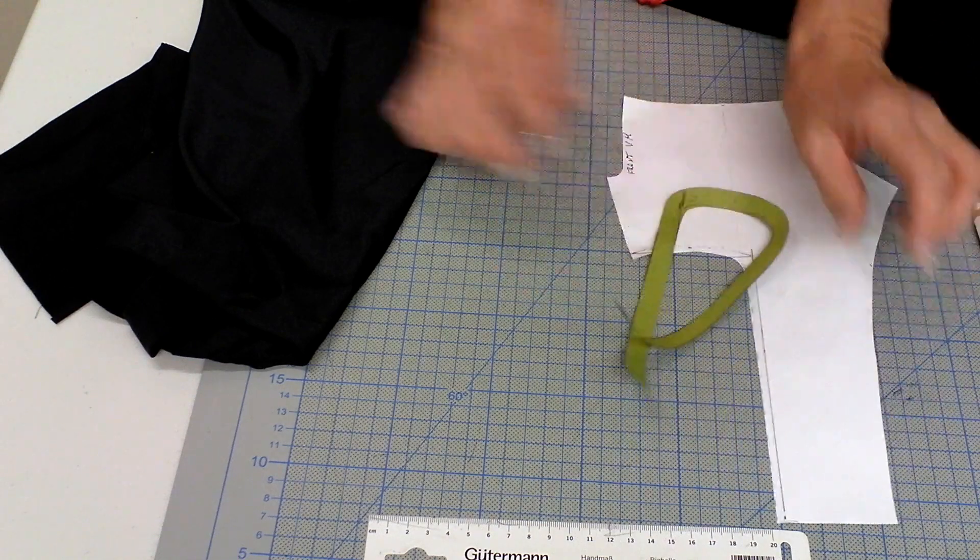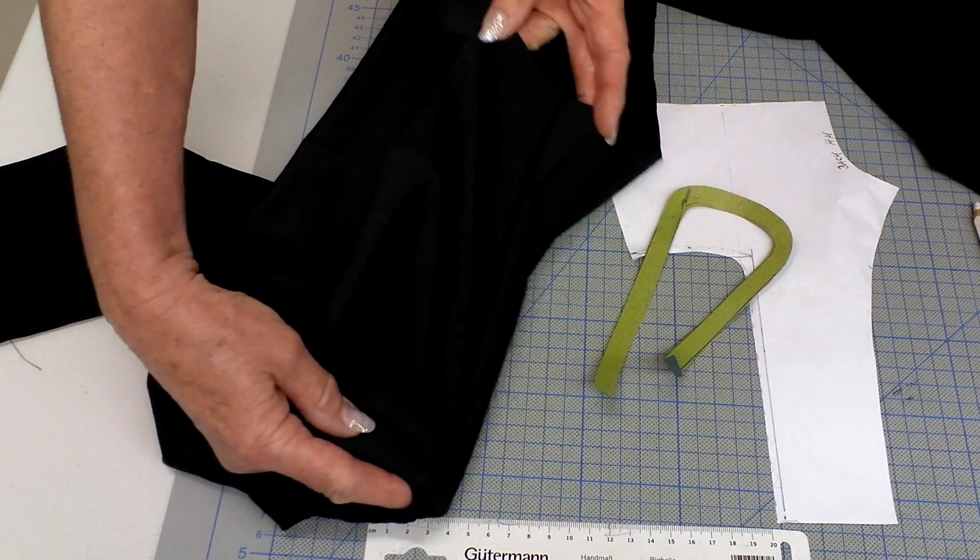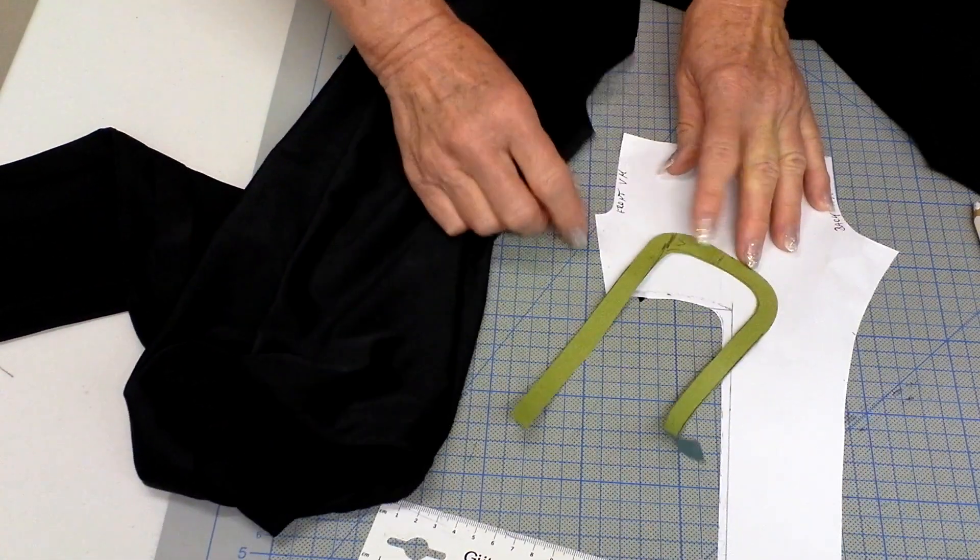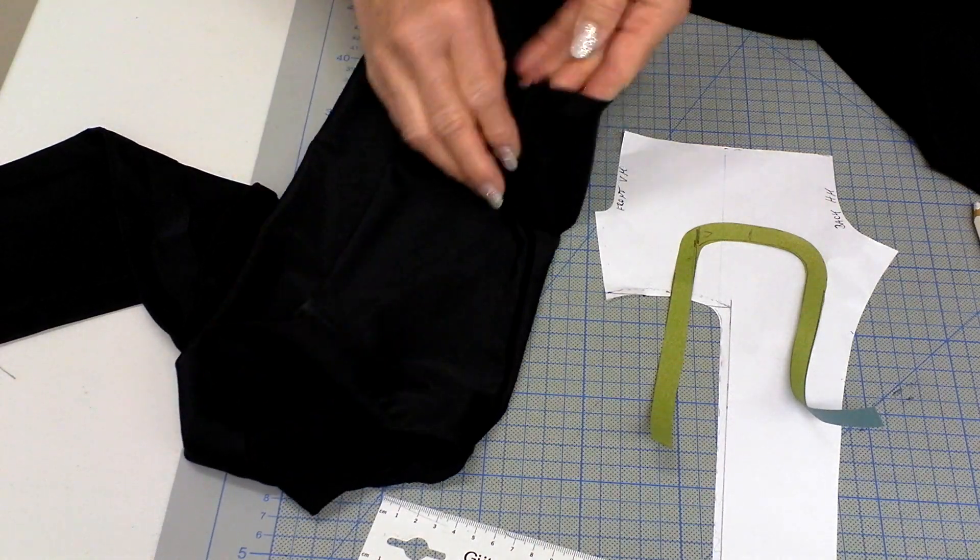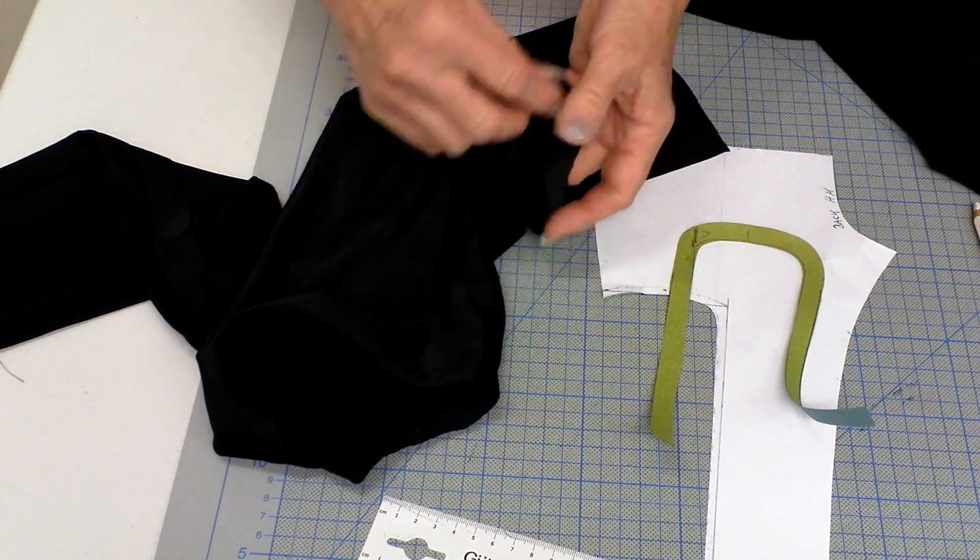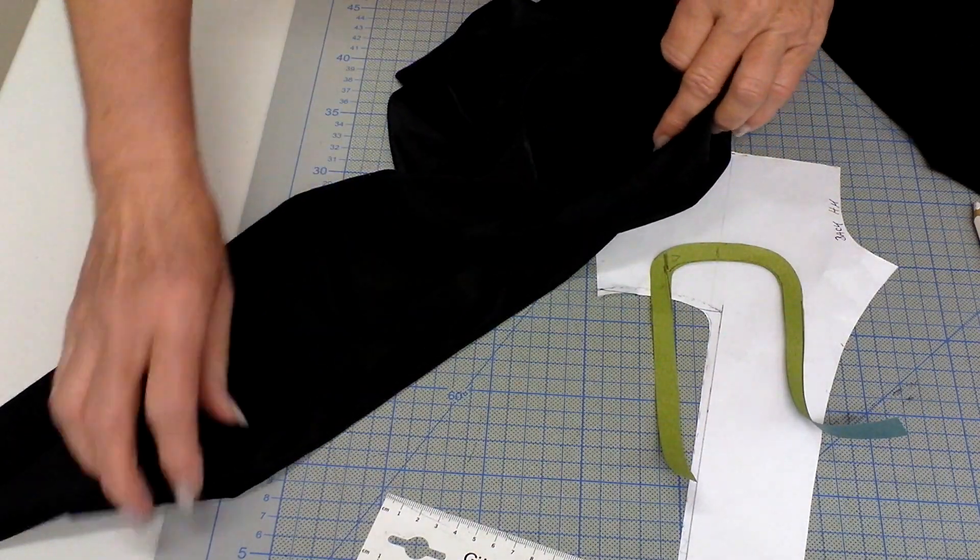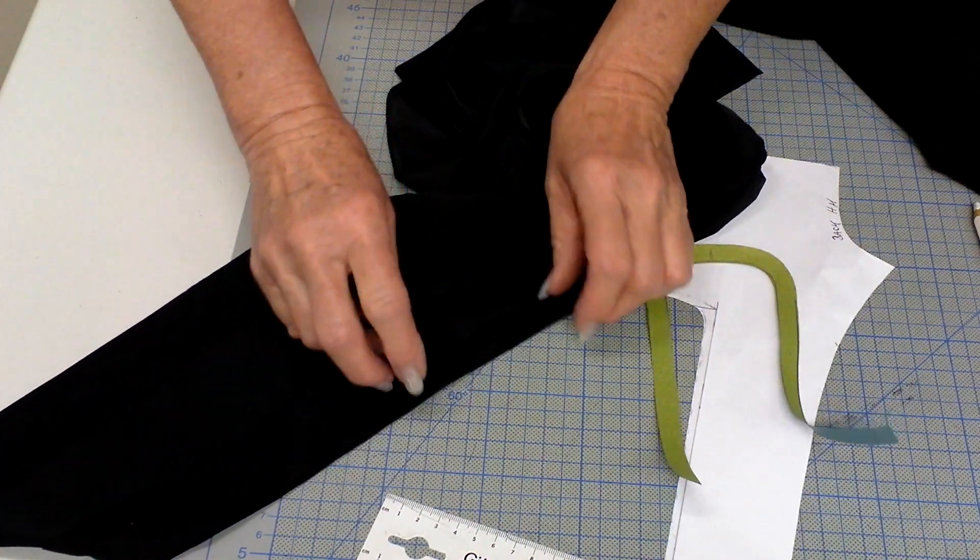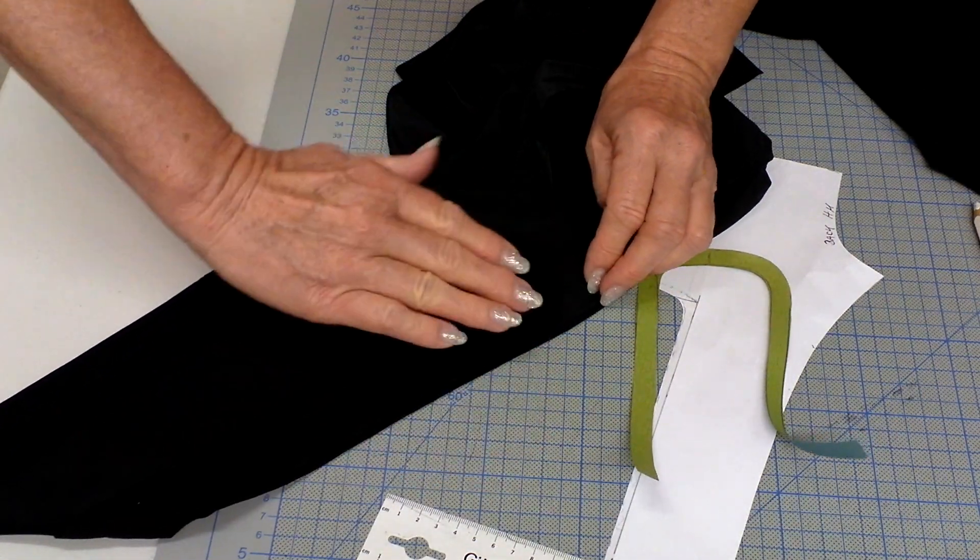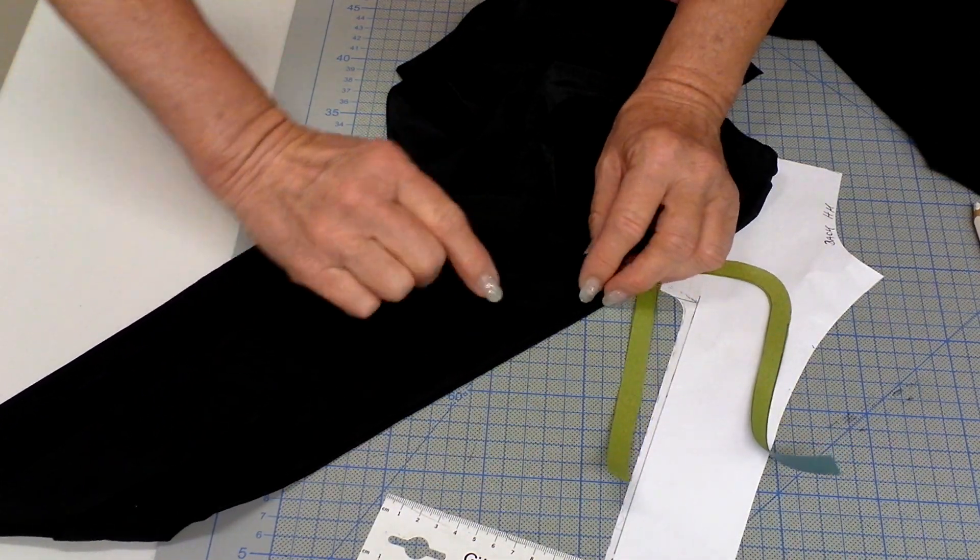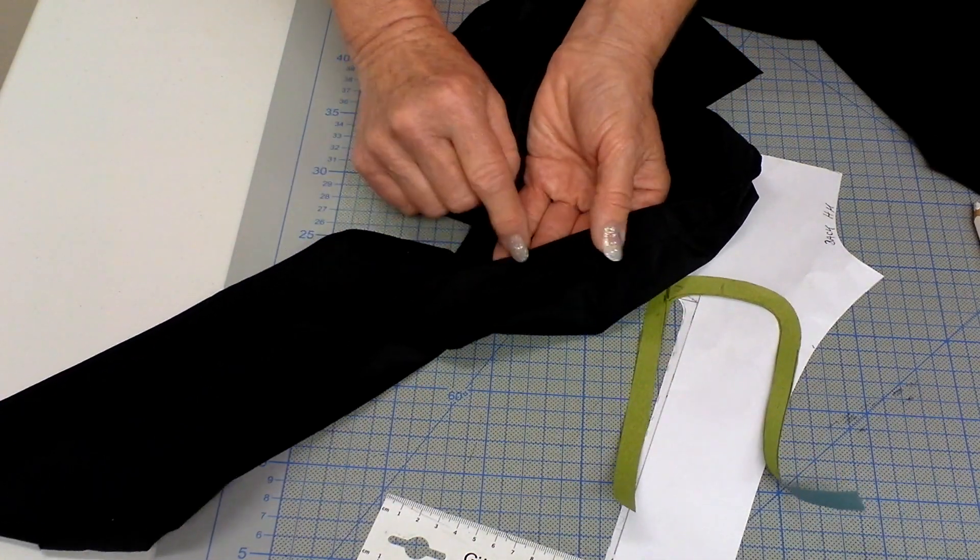When you've done that you can put little cut ends into the corners, then turn the facing towards the inside and stitch it down. Now I show to you how I've done it here already and you will see right away it's not so easy to see.